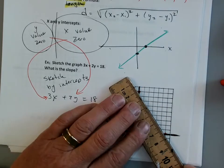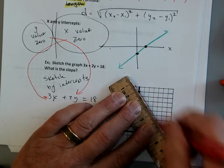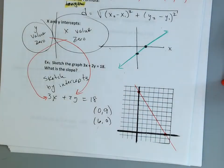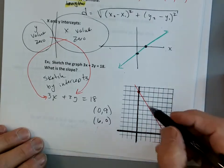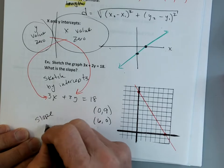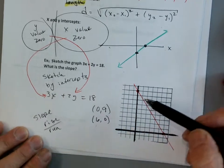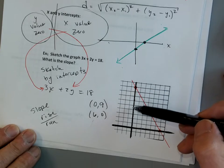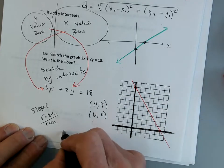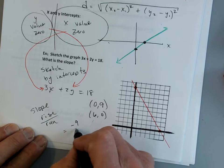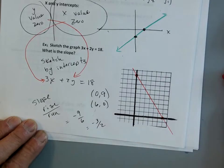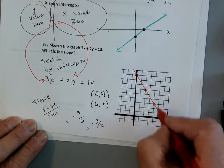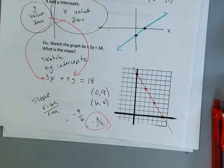Connect the dots and there's my line. That was pretty easy to graph, wasn't it? Now the slope — one way to do slope is just to count it. We know that slope is rise over run. I can go down 9 over 6, which is the same as down 3 over 2. So it's down 3 over 2 repeatedly — that's the reduced slope.